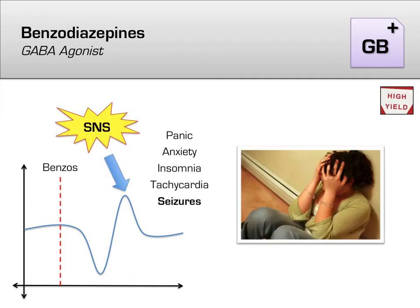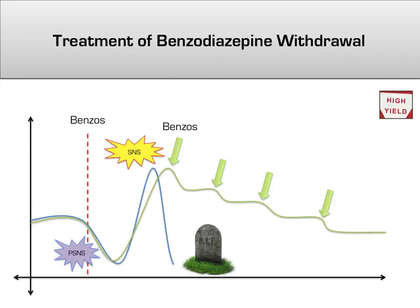The clinical picture of benzodiazepine withdrawal is everything you would expect, knowing that withdrawal often produces the opposite effect of intoxication. It is characterized by increased cognitive awareness, anxiety, and panic attacks. Physiologically, sleep becomes more difficult, and vital signs often resemble the effects of the sympathetic nervous system, such as tachycardia and tachypnea. In severe cases, seizures can develop, requiring ICU care. While not as deadly as alcohol withdrawal, withdrawal from benzodiazepines is still a serious event and requires close monitoring. Similarly to alcohol, the treatment is a controlled benzodiazepine taper to allow for a safe return to baseline.